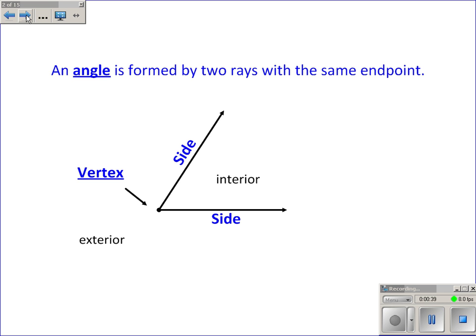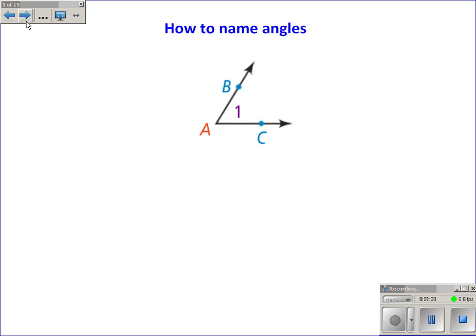I know that you've seen angles, you've used angles, you've learned about angles. The definition that we'll use in this class is that an angle is formed by two rays with the same endpoint. Those two rays are called sides, and the common endpoint is called the vertex. The inside of the angle is called the interior, and the outside is called the exterior. I don't think any of that's really complicated, it's just some names and some terms that we'll use when talking about angles throughout the year.